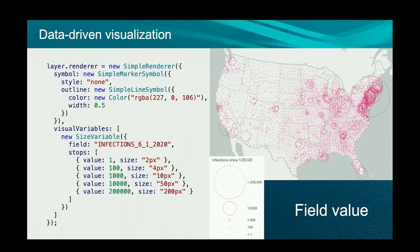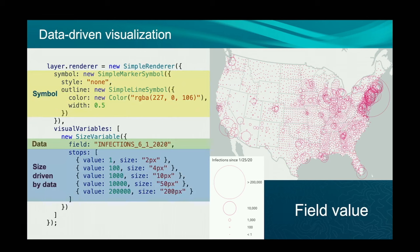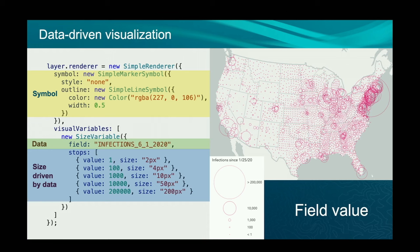How does a visual variable work? Fundamentally, you define it in a simple renderer, set that on the renderer property of your layer, and set a symbol — for example, a simple marker with a hollow ring and pink color. Then you set a visual variable that says you want to change the size dynamically based on a field name, like the number of COVID infections on June 1st, 2020. A stops field allows you to map a data value to a size, with everything in between interpolating appropriately, bounded at the bottom and the top.